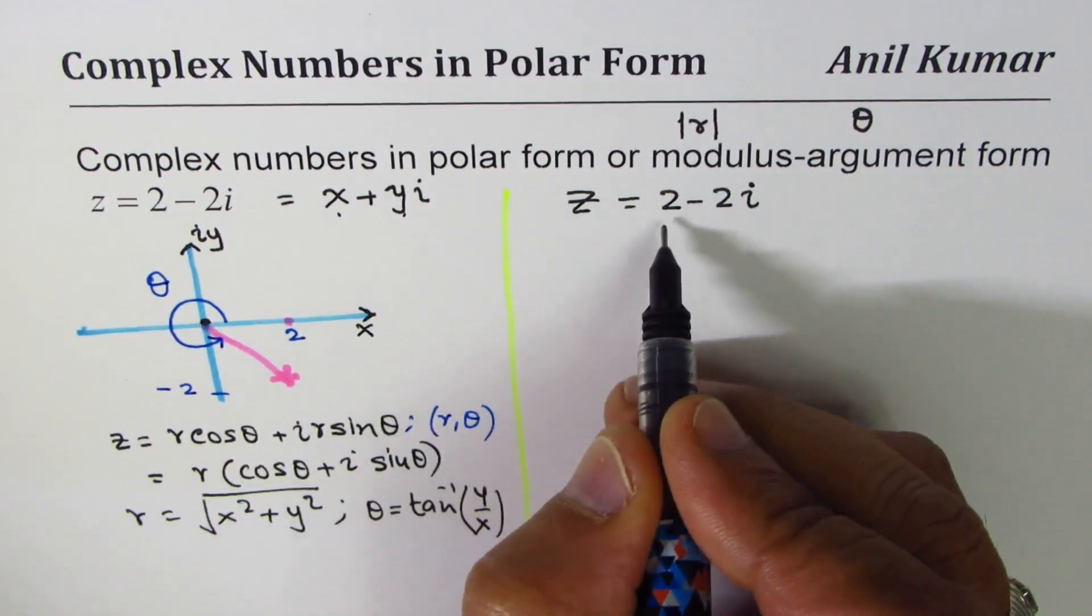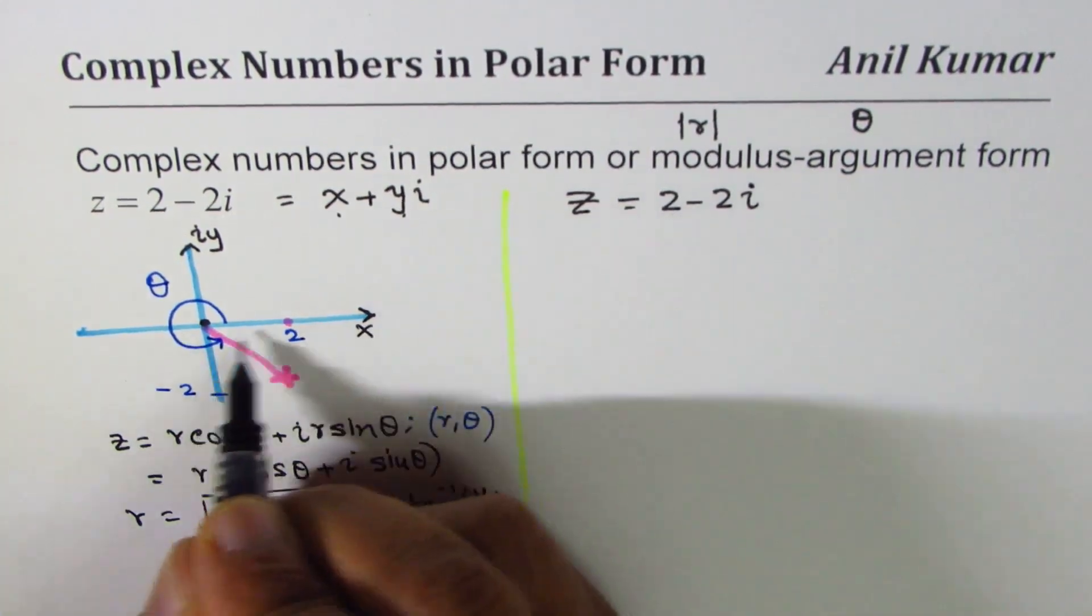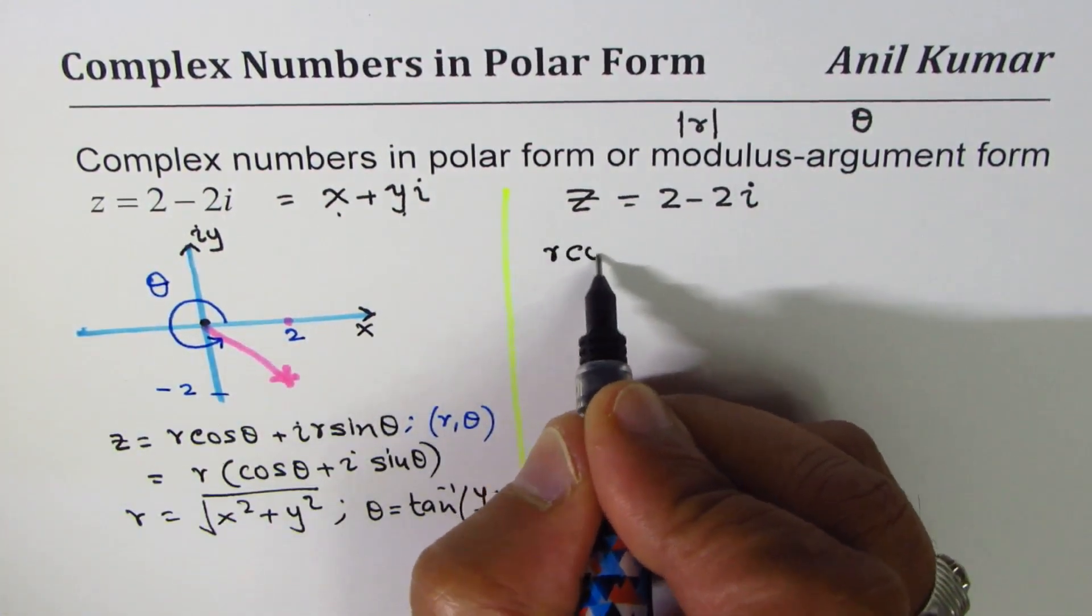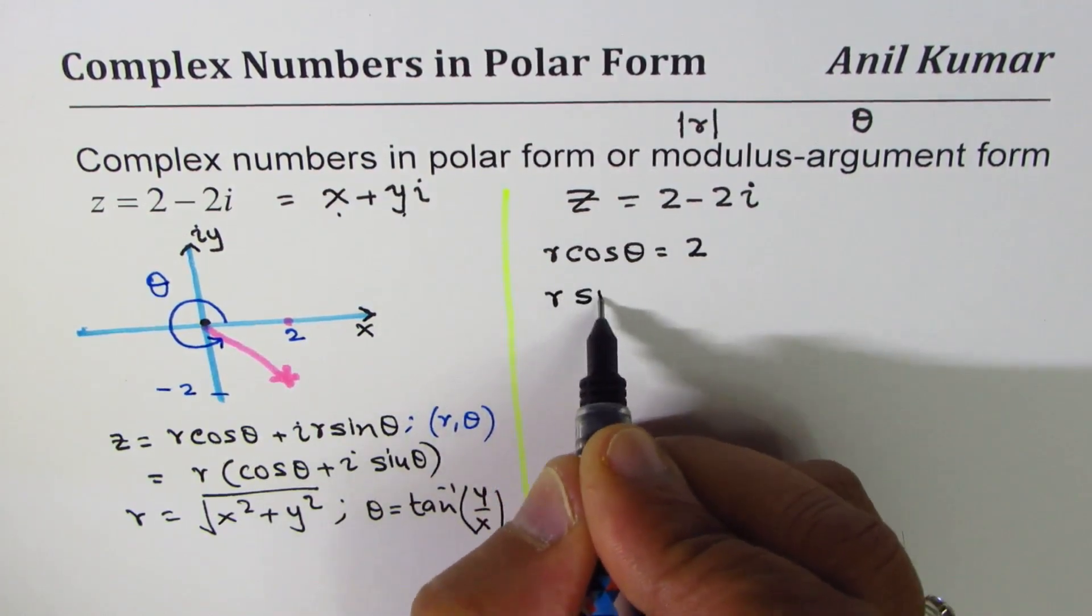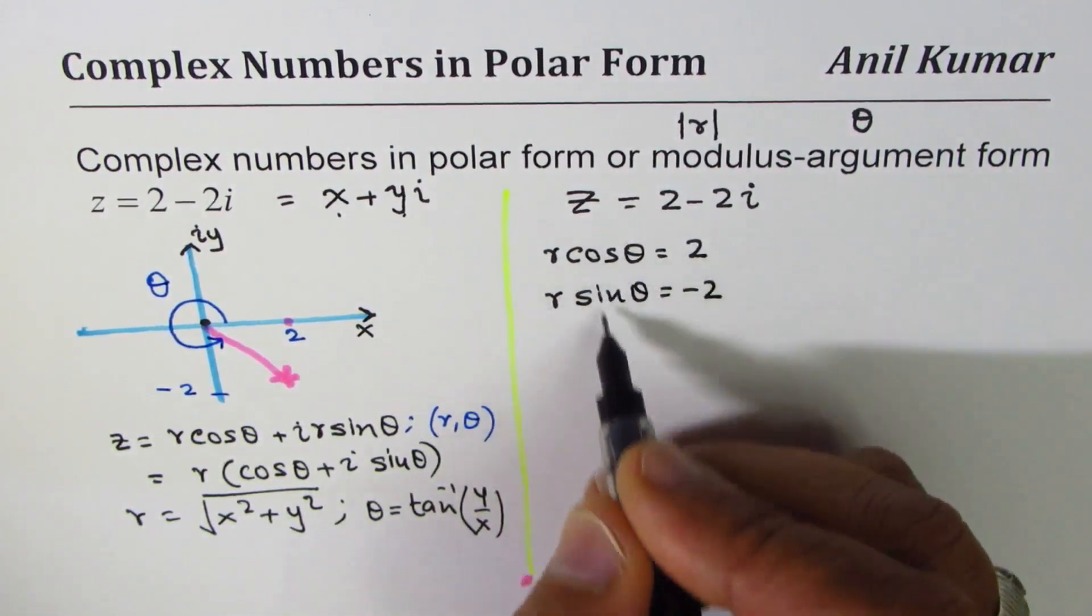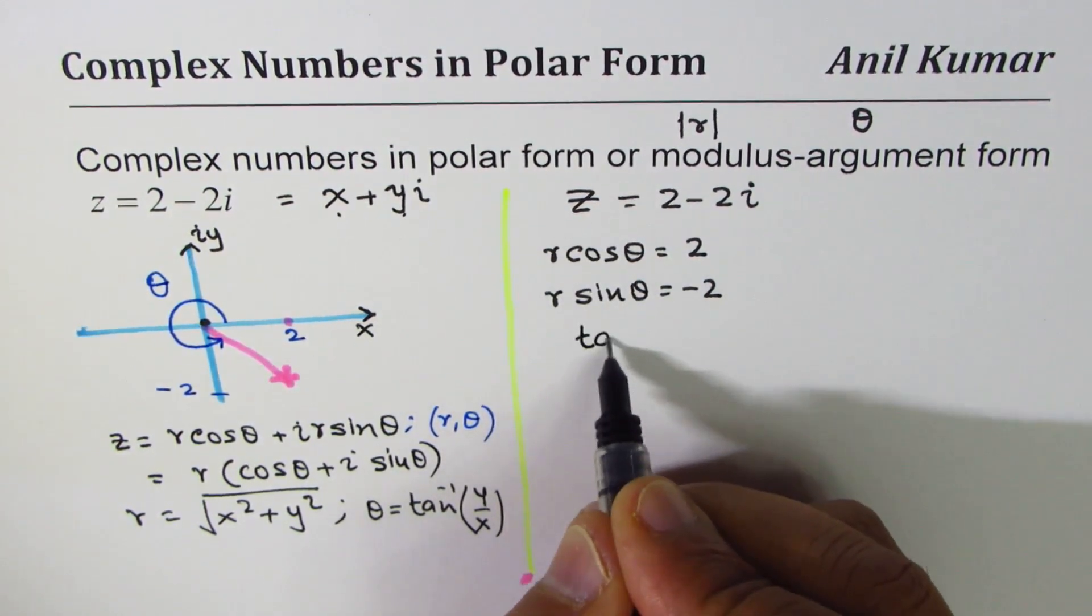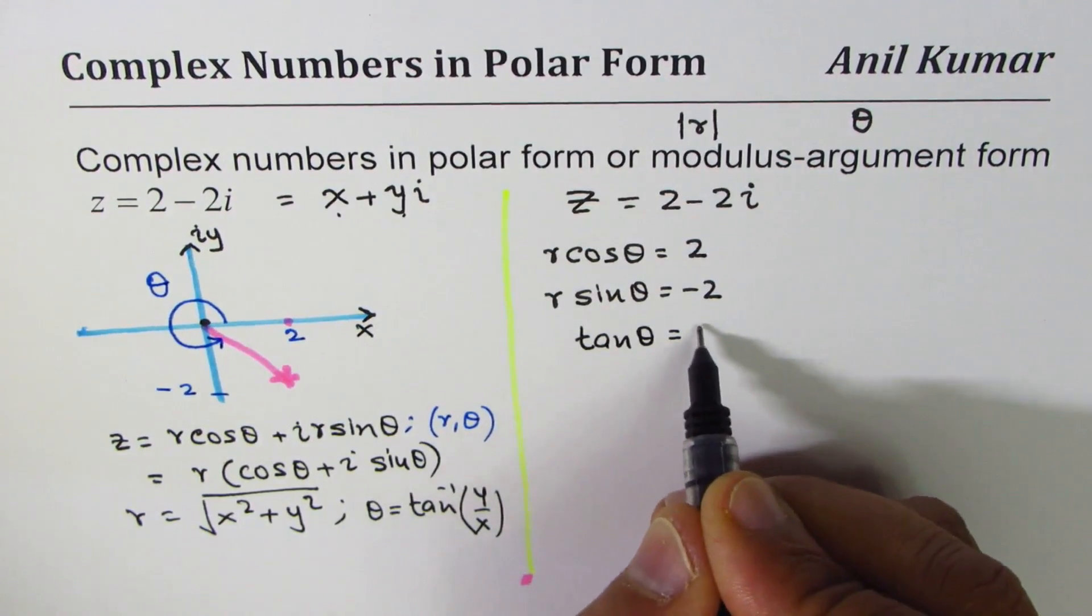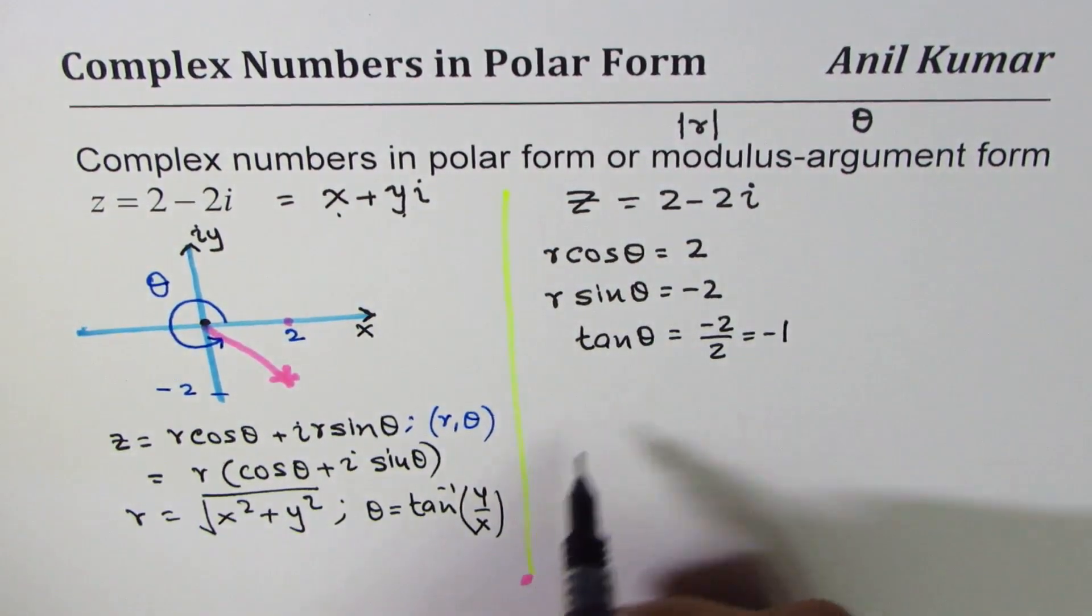That really means that the real part here, the r cos theta, so r cos theta is 2 and r sin theta is minus 2. So when you divide, let's say sin theta over cos theta, then we get tan theta equals to minus 2 over 2 which is minus 1.